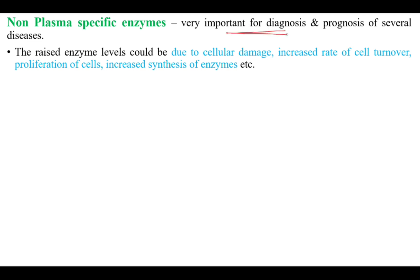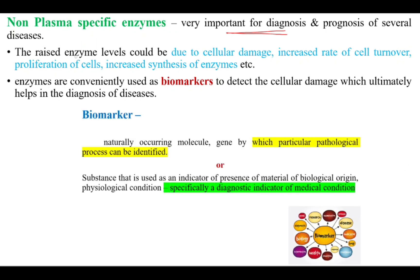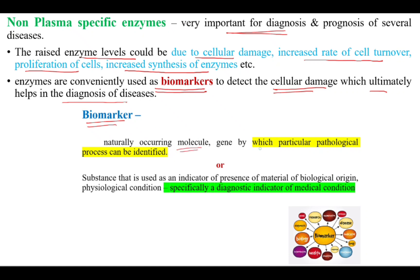Non-plasma-specific enzymes are very important for the diagnosis and prognosis of several diseases. The raised enzyme levels could be due to cellular damage, increased rate of cell turnover, proliferation of cells, or increased synthesis of enzymes. Enzymes are conveniently used as biomarkers to detect cellular damage, which ultimately helps in diagnosis of disease. A biomarker is a naturally occurring molecule or gene by which a particular pathological process can be identified, or a substance used as an indicator of a physiological condition — specifically a diagnostic indicator of medical conditions.